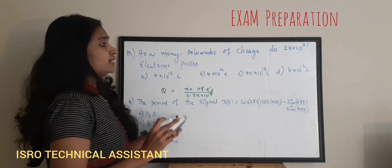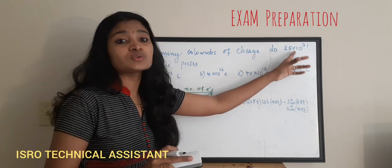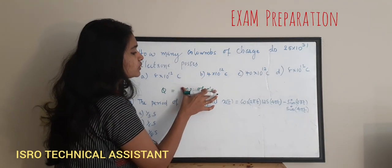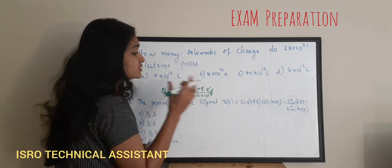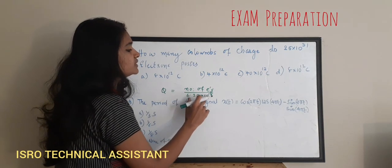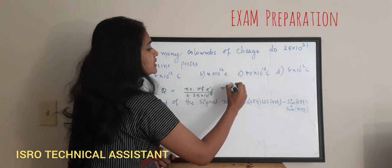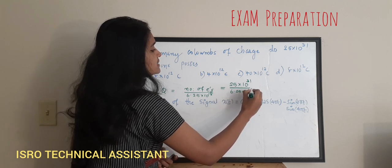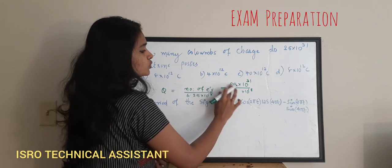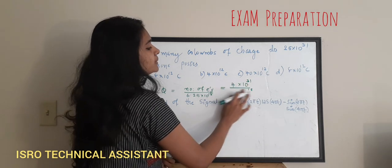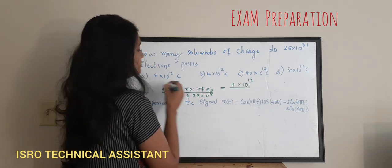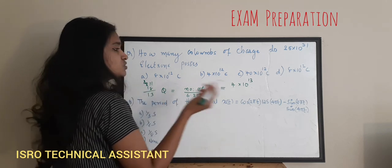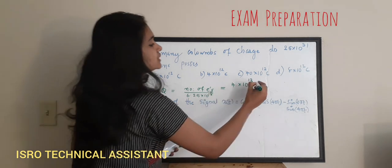To find how much charge is possessed by any number of electrons, divide that number by 6.25×10¹⁸, because one coulomb is the charge possessed by 6.25×10¹⁸ electrons. For this question: Q = (25×10³¹) / (6.25×10¹⁸). Now 25 divided by 6.25 is 4, and 10³¹ divided by 10¹⁸ is 10¹³. So the answer is 4×10¹³ coulomb.